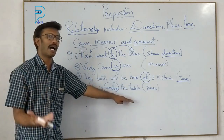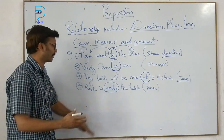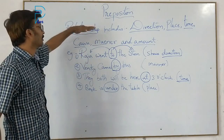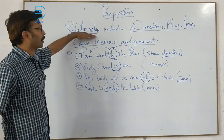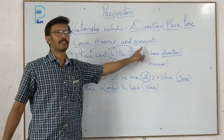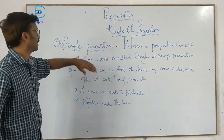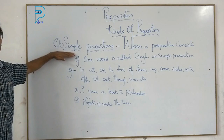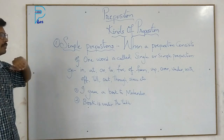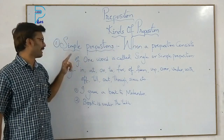With all these four examples, we came to know that the preposition relationships include direction, place, time, cause, manner, and amount. Now let us learn about the kinds of prepositions. There are four kinds of prepositions. The first one is simple preposition.